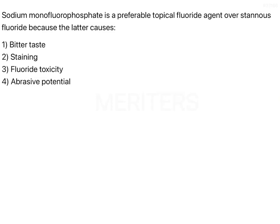The question is: sodium monofluorophosphate is a preferable topical fluoride agent over stannous fluoride because the latter causes — what? So you have three agents which are used as topical fluoride agents: one is sodium fluoride, the other one is stannous fluoride, and the third one is acidulated phosphate fluoride.